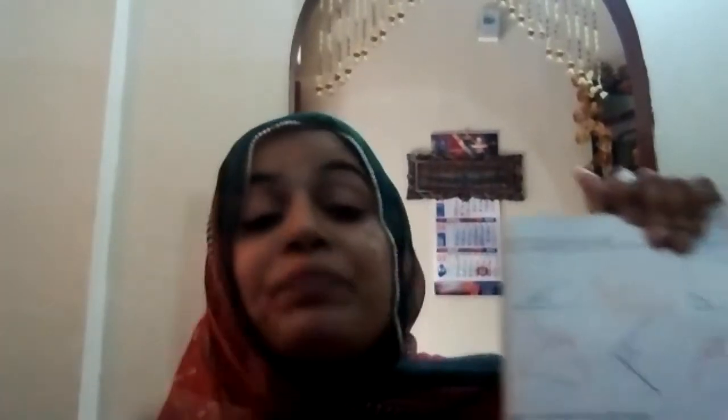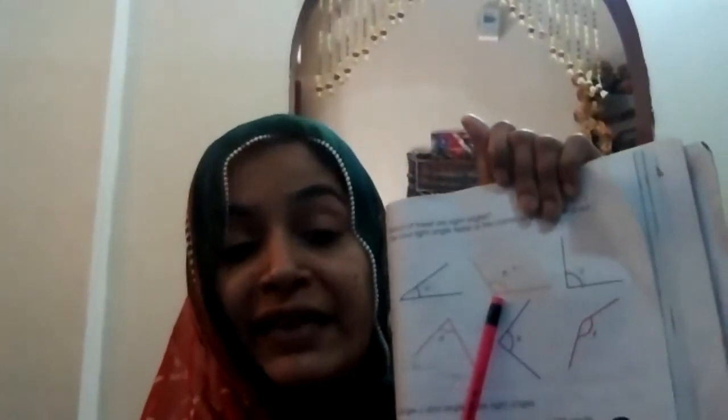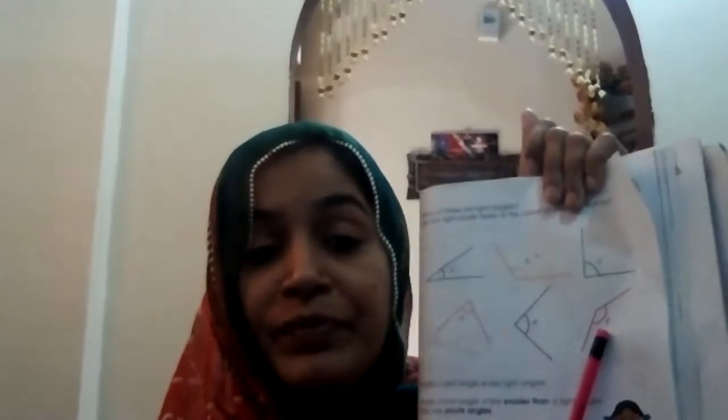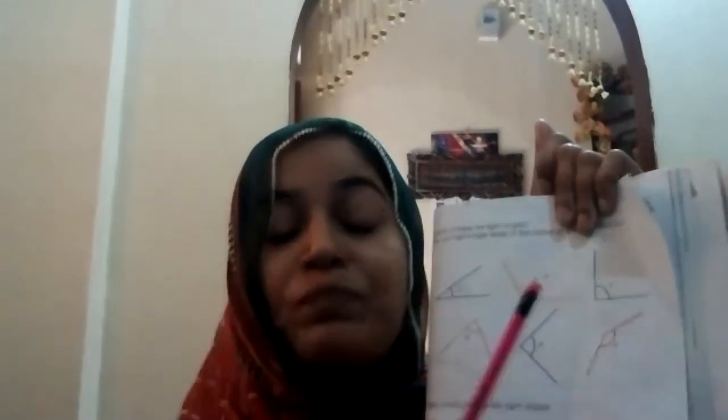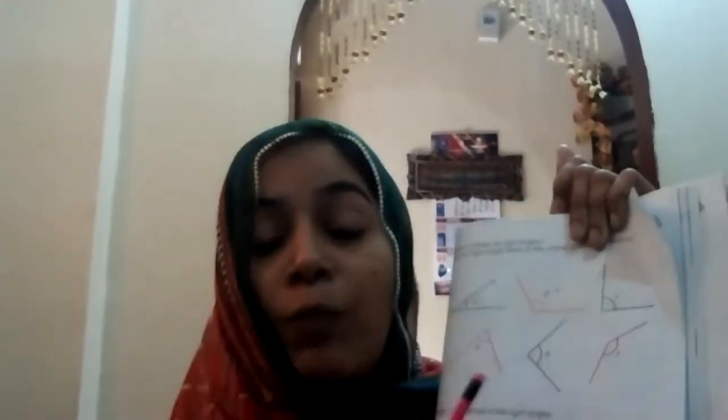Now, A and D are both acute angles because these two angles are smaller than the right angle. Now we will find out where our obtuse angle is. Our obtuse angle is B — look at B. And beyond this, our obtuse angle is angle F. Angle B and angle F are both our obtuse angles. I hope this page is now very clear.